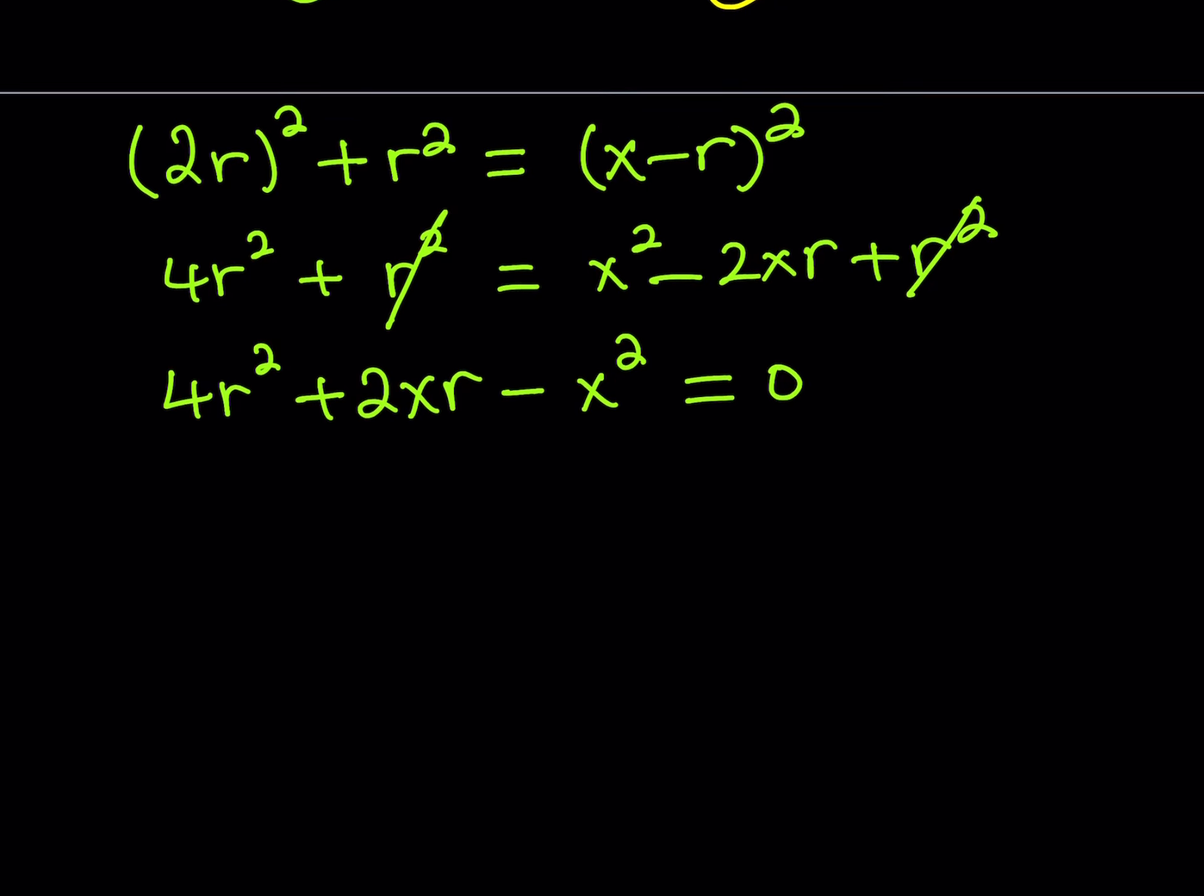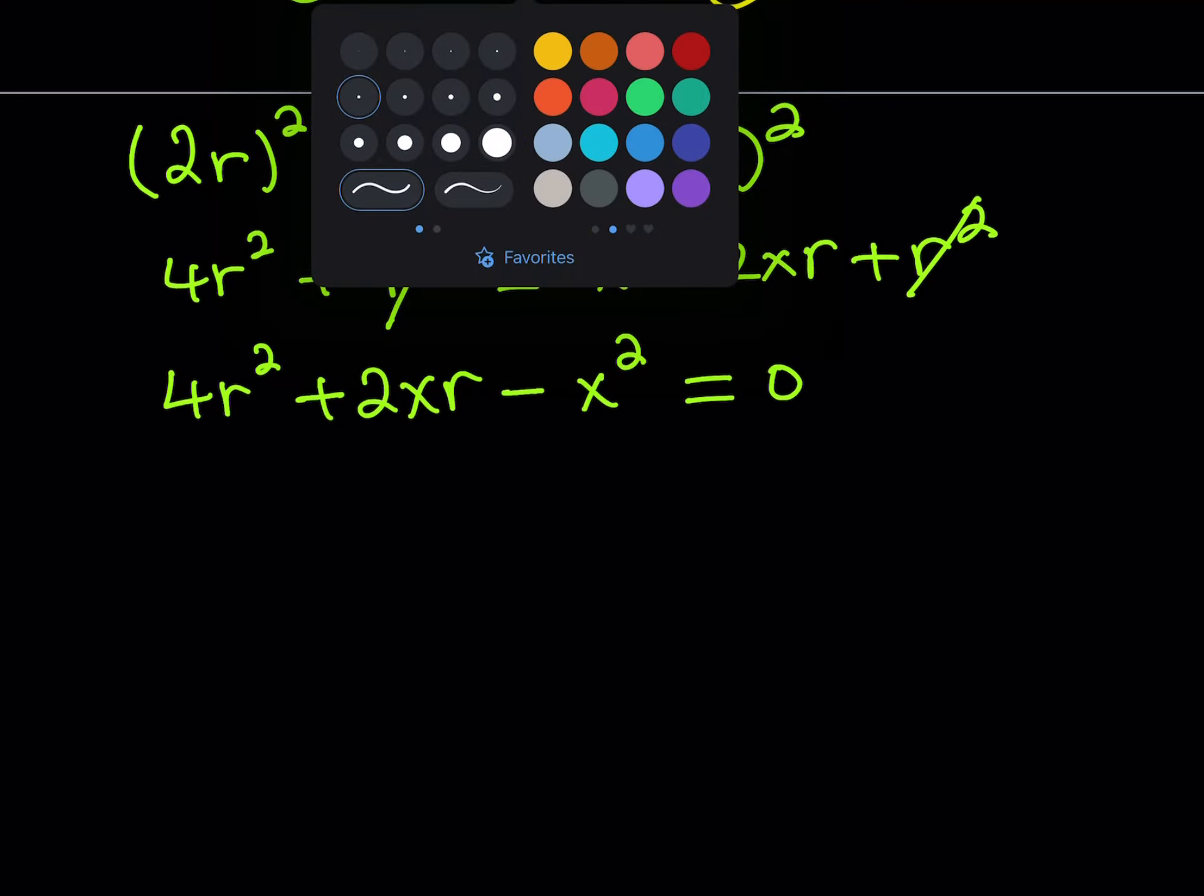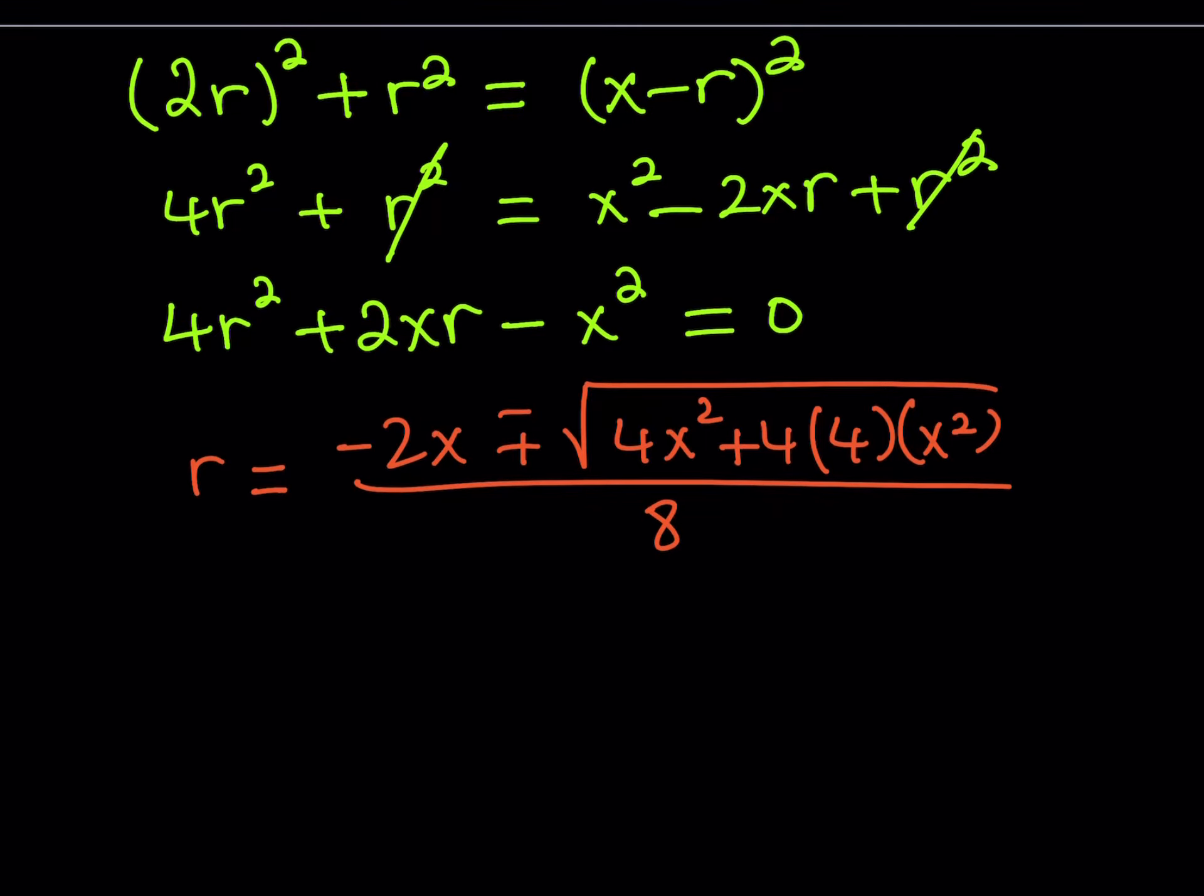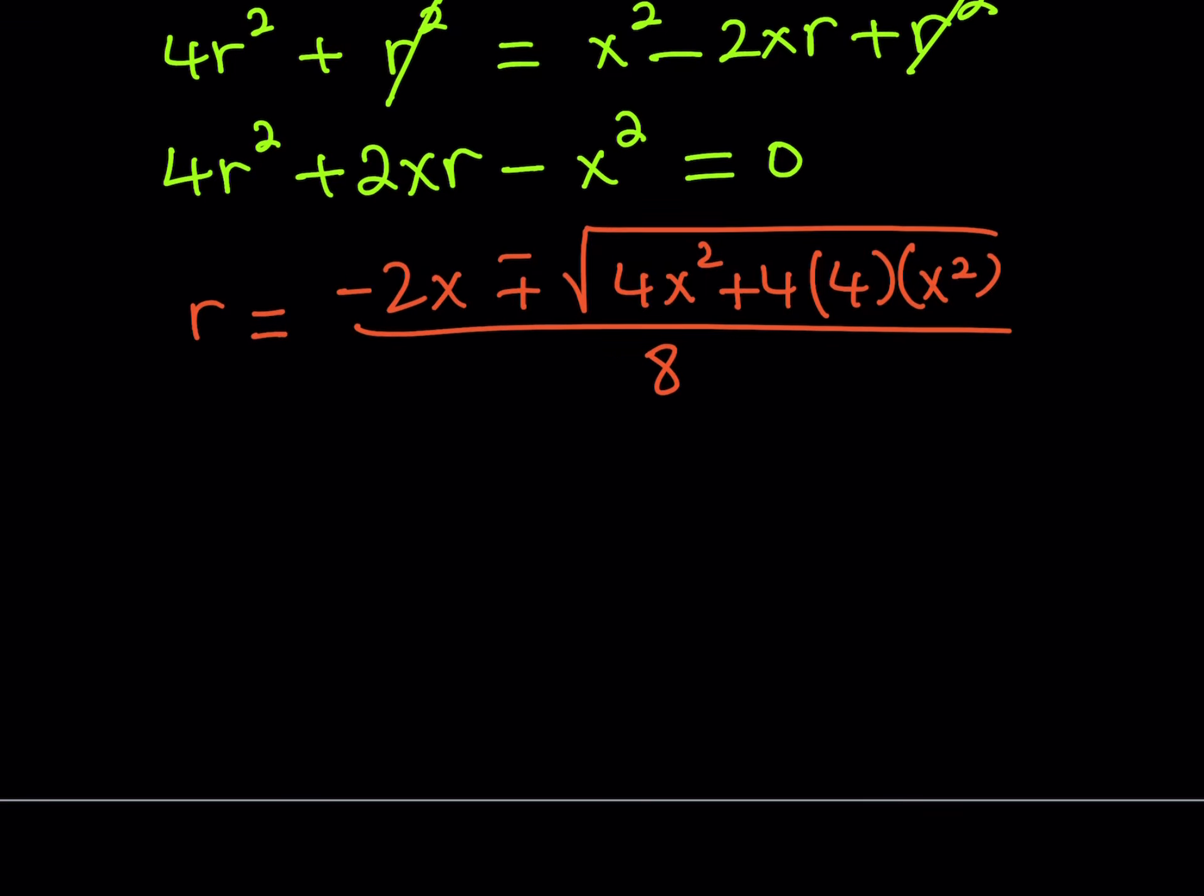Since this is a quadratic equation in r, I can actually solve it. I'm interested in solving for r. So let's solve this using quadratic formula. r equals negative b plus minus the square root of b squared, which is 4x squared, minus 4ac. Since I have the c as negative, I can negate the negative and make it a positive. All over 2 times a, which is 8.